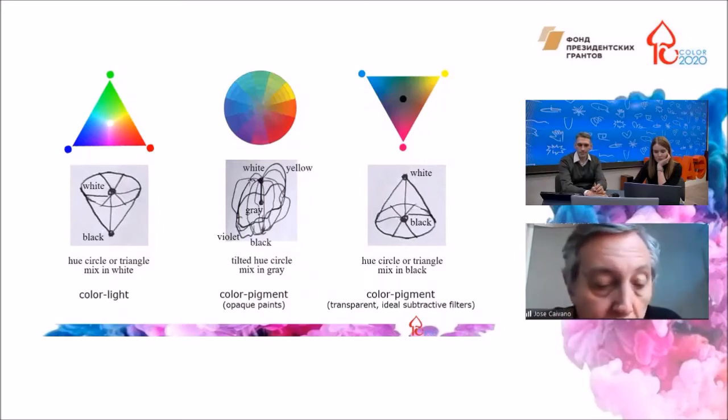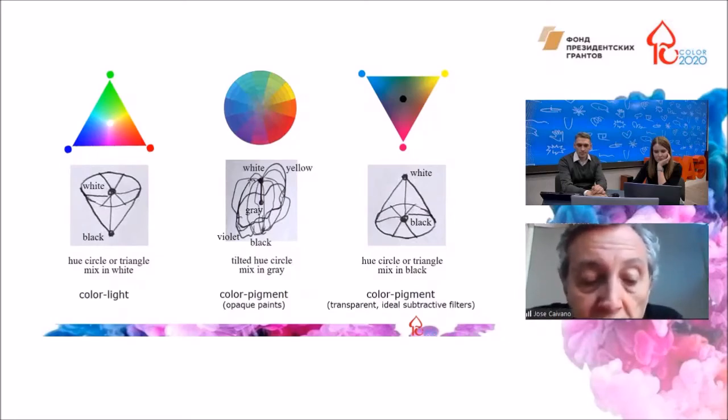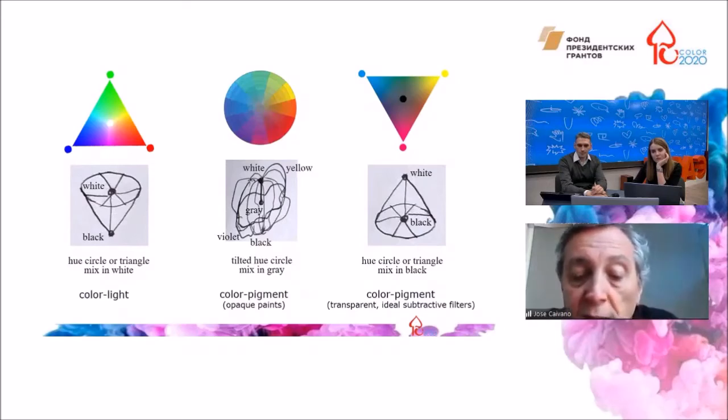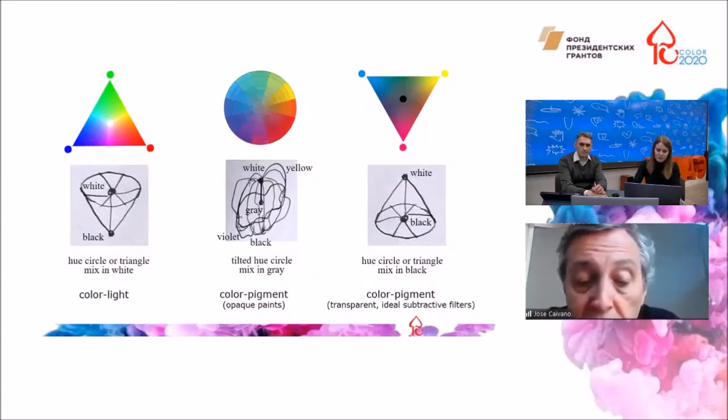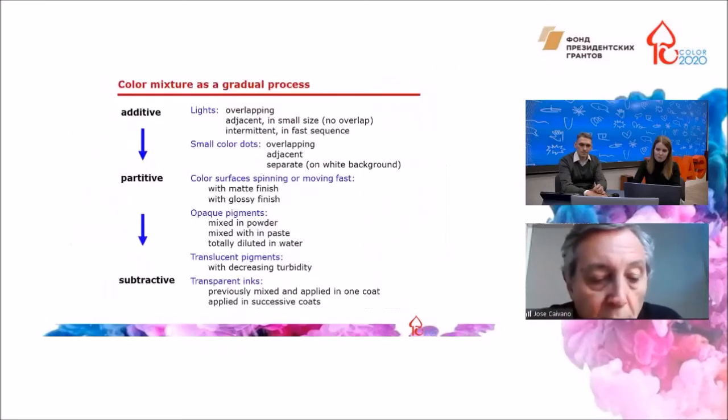Second case, opaque pigments displayed around a tilted hue circle with yellow closer to white and violet closer to black, mixed in middle gray, which is located midway along the achromatic axis in an approximate spherical shape that is usually irregular. And third, trichromatic pigmentary primaries, cyan, magenta, and yellow, working as ideal transparent subtractive filters mixed in black. And white is located here outside these surfaces where the subtractive pigments have no influence at all.